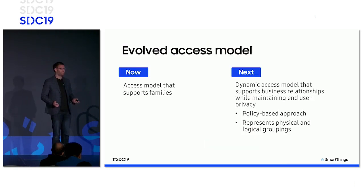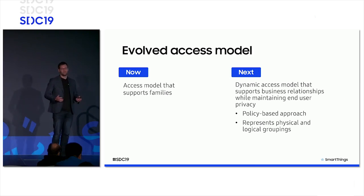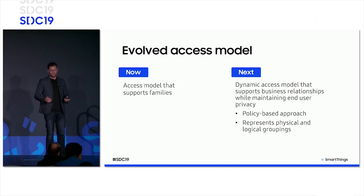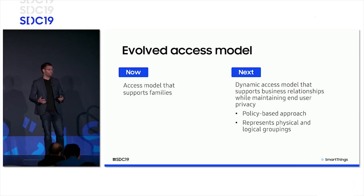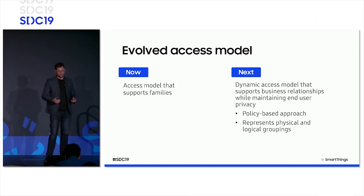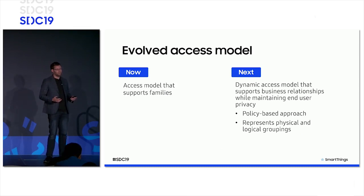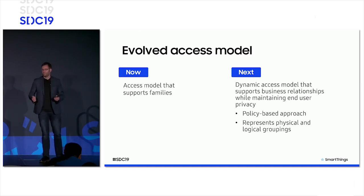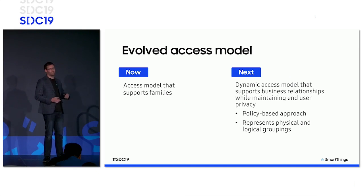Let's start with how we're evolving the access model. What we have today works great in high-trust scenarios, like everybody in your home having the same level of access. But in the enterprise, we need to take these concepts further. We're working on a dynamic policy-based approach that will allow us to represent the intricate relationships seen in the real world within our platform. We'll be able to customize these policies and this access model to suit unique use cases, and the rest of the SmartThings platform will respect those policies regardless of how it's accessed. For example, in the multifamily industry, user privacy and security is paramount — users want their data secure, but also want to grant a property manager access so that if the washer starts leaking when they aren't home, the issue can be resolved quickly.